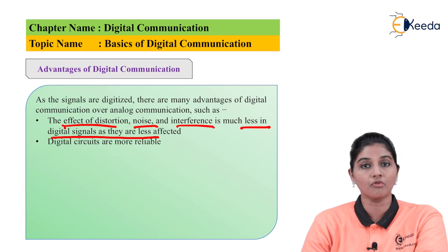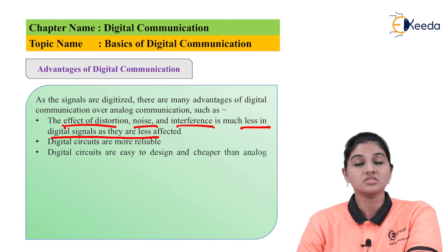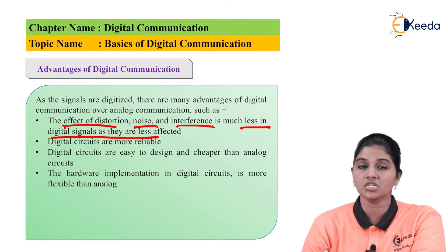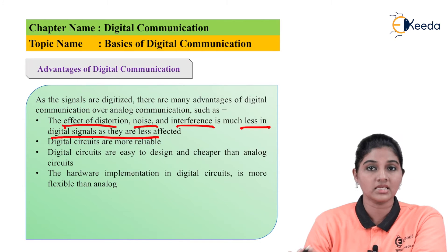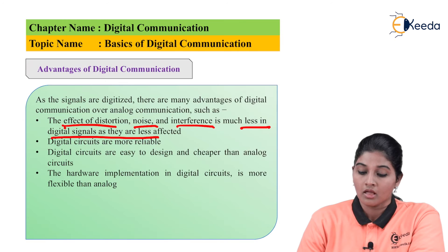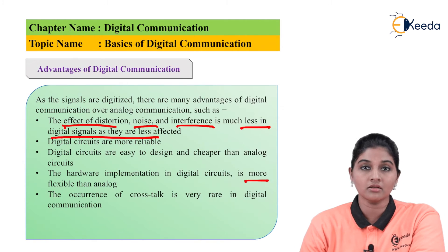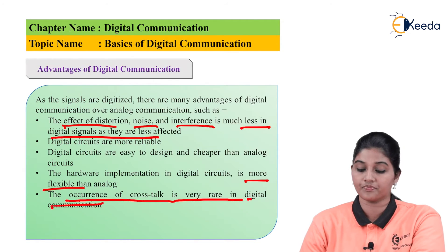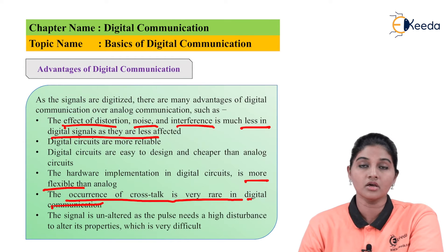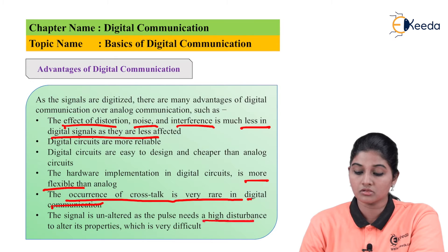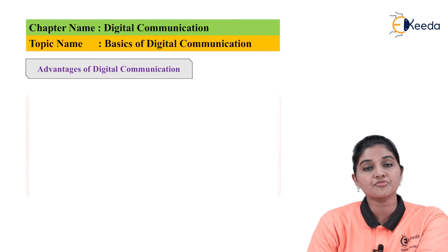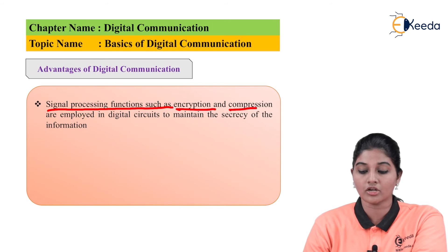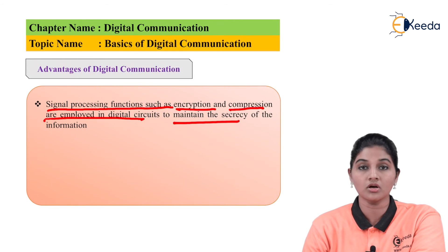Digital circuits are more reliable as compared to analog circuits. They are easy to design and implement, and hardware implementation in digital systems is less costly and easier than analog systems. Digital systems also provide more flexibility than analog circuits. The occurrence of crosstalk is very rare in digital communication. The signal is not altered, making high-level tampering very difficult. Signal processing functions such as encryption and compression are used in digital circuits for maintaining security.